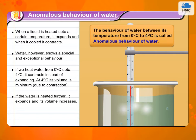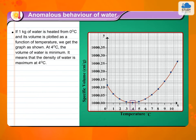The behaviour of water between 0 degree Celsius to 4 degree Celsius is called anomalous behaviour of water. If 1 kg of water is heated from 0 degree Celsius and its volume is plotted as a function of temperature, we get the graph as shown. At 4 degree Celsius, the volume of water is minimum, meaning the density of water is maximum at 4 degree Celsius.